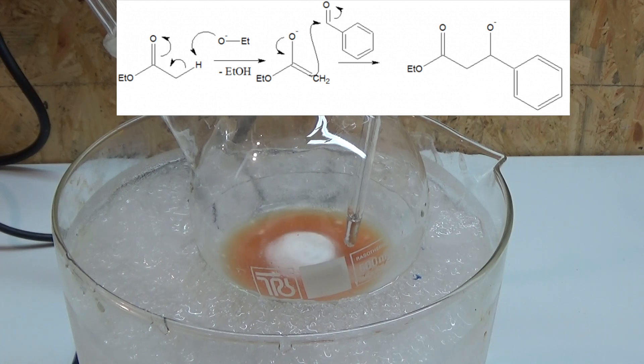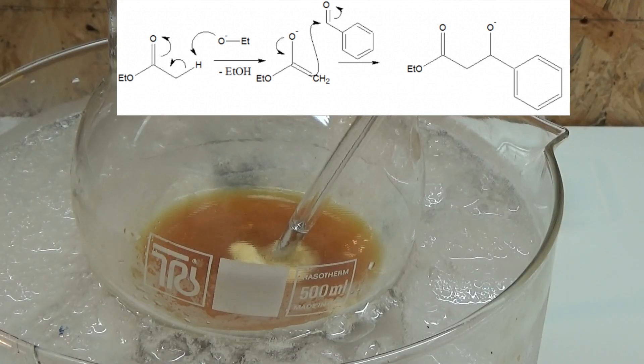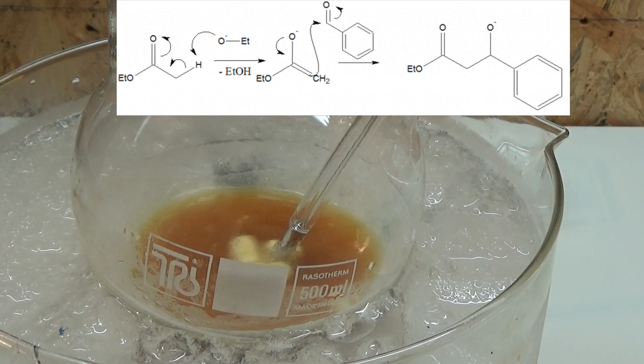Over the span of the reaction the mixture darkens in an orange-reddish way. This is due to side reactions because our intermediate ethyl ester of the desired cinnamic acid is a colorless liquid.